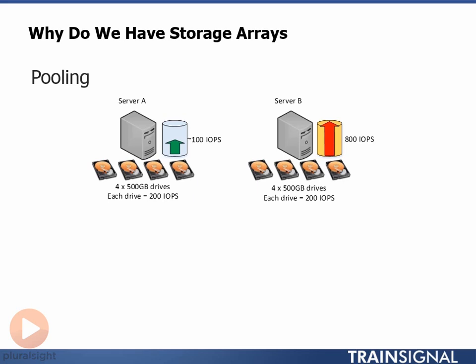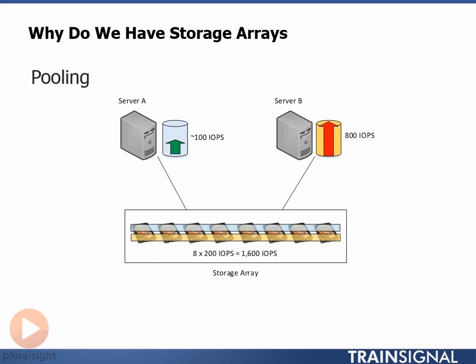Switching to our storage array approach — in exactly the same way that capacity was pooled, if we move those 8 drives out of the 2 servers and into our storage array, the IOPS capability of the drives is also pooled and available to both servers. As we can see from our diagram, each server has a 1TB volume striped across all 8 physical drives. This means each of the 2 logical volumes has access to the potential 1600 IOPS of the combined 8 drives, and Server B is now able to utilise over 1000 IOPS. This can be pretty significant when done at scale, with hundreds of drives pooled together rather than a measly 8.